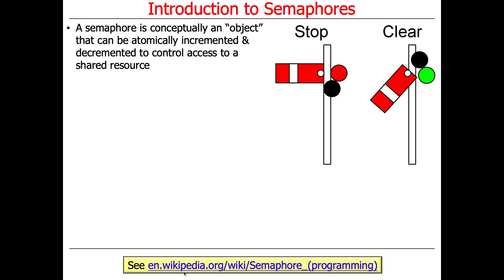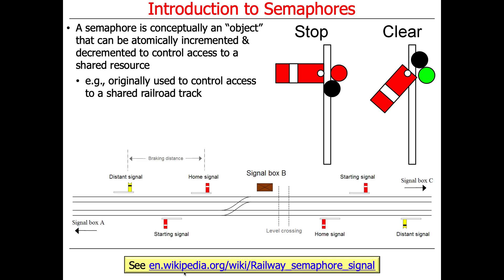A semaphore is used to control access to a shared resource — or perhaps a better way to put it, to a limited number of shared resources, such as Palantiri or beach volleyballs. It was originally designed to be used in the context of controlling access to shared railroad tracks, so you could make sure that two trains were not on the same shared track at the same time in such a way that they would cause a collision. The word semaphore also has another meaning for people familiar with the history of naval operations.